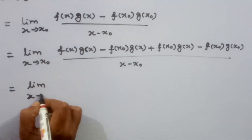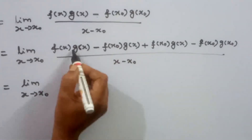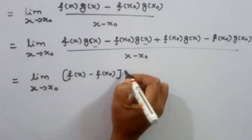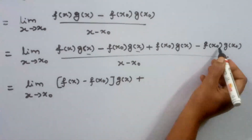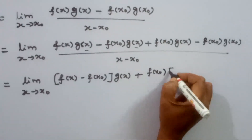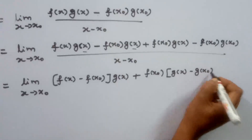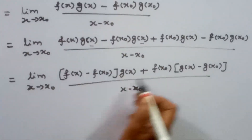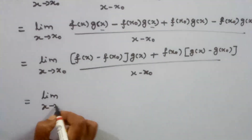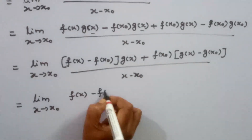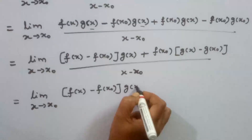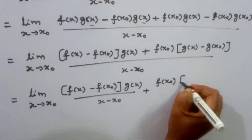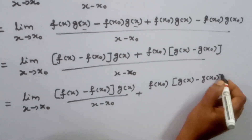Which equals limit x tends to x0 of: the numerator is grouped as f of x minus f of x0 into g of x, plus f of x0 into g of x minus g of x0, all divided by x minus x0. The numerator has two terms — the first term is marked by g of x and the second term by f of x0.